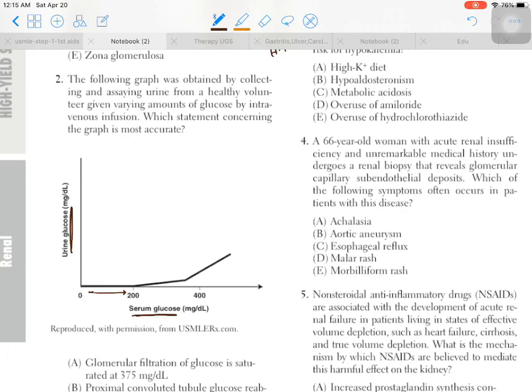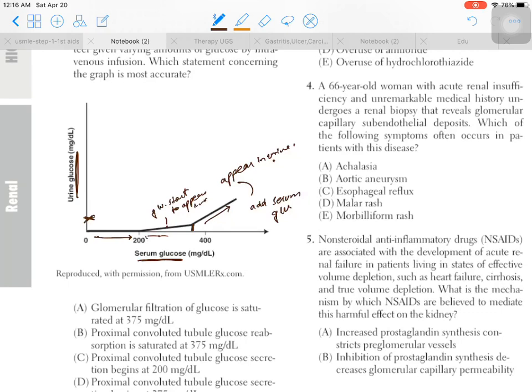When we increase from 200 mmHg toward 400, then glucose starts to appear in urine at this point. When we reach this point, it becomes directly proportional - as we increase serum glucose, glucose will appear in urine.